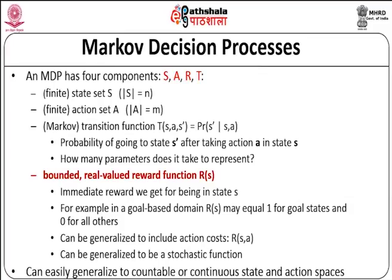An MDP has four components: finite states, actions, a transition function (the probability of going to state s' after taking action a in state s), and a real-valued bounded reward function R(s) — the immediate reward for being in state s. For example, in a goal-based domain, R(s) may equal 1 for goal states and 0 for all others. This can be generalized to include action costs as R(s, a), and can also be a stochastic function or extended to continuous state and action spaces.